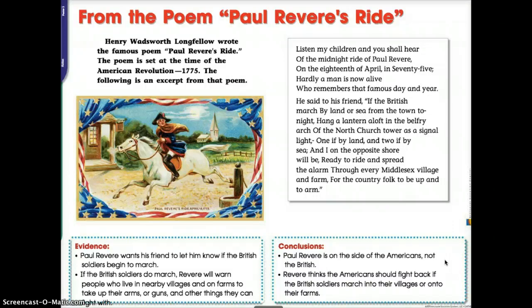It wasn't just Paul Revere — there was also William Dawes and William Prescott, who also made a ride. Paul Revere was actually captured, but the other two were able to make it to Concord. They were able to hide things and get the militia ready, and that became the first real battle of the American Revolution. So you can see that your evidence leads to your conclusions.